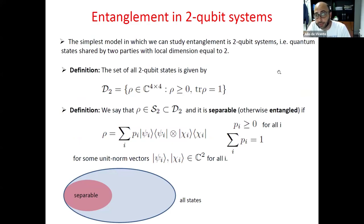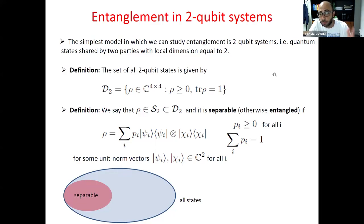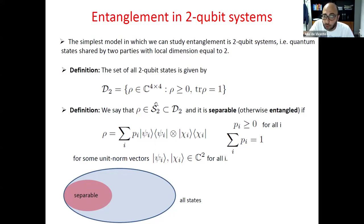Entanglement can occur in multipartite systems of many parties with dimensions that can take any natural number. The simplest model in which we can study entanglement is two-qubit systems — just two parties with local dimension equal to two. The results I am going to present have to do with this simplest model. Before presenting the problem, I want to give very basic definitions so that everything is clear to everyone. When we consider two-qubit states, mathematically this means we are considering four-by-four matrices which are Hermitian, positive semi-definite, and have trace one.